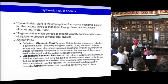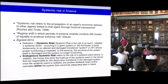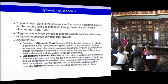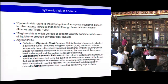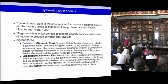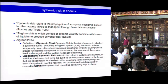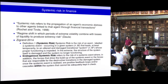I was trying to look for some definitions of systemic risk. It's very vaguely defined. The first definition, by Rochet and Tirole in a seminal paper of 1988: systemic risk refers to the propagation of economic distress to other agents linked to that agent through financial transactions. More recently, in a review paper by Zigrand, systemic risk is defined as the risk of a systemic event occurring in a given system that leads, at least temporarily, to an altered and damaged transitional system whose proper functioning is impeded. In the extreme, the structure of the system itself is damaged and the system is no longer functioning.